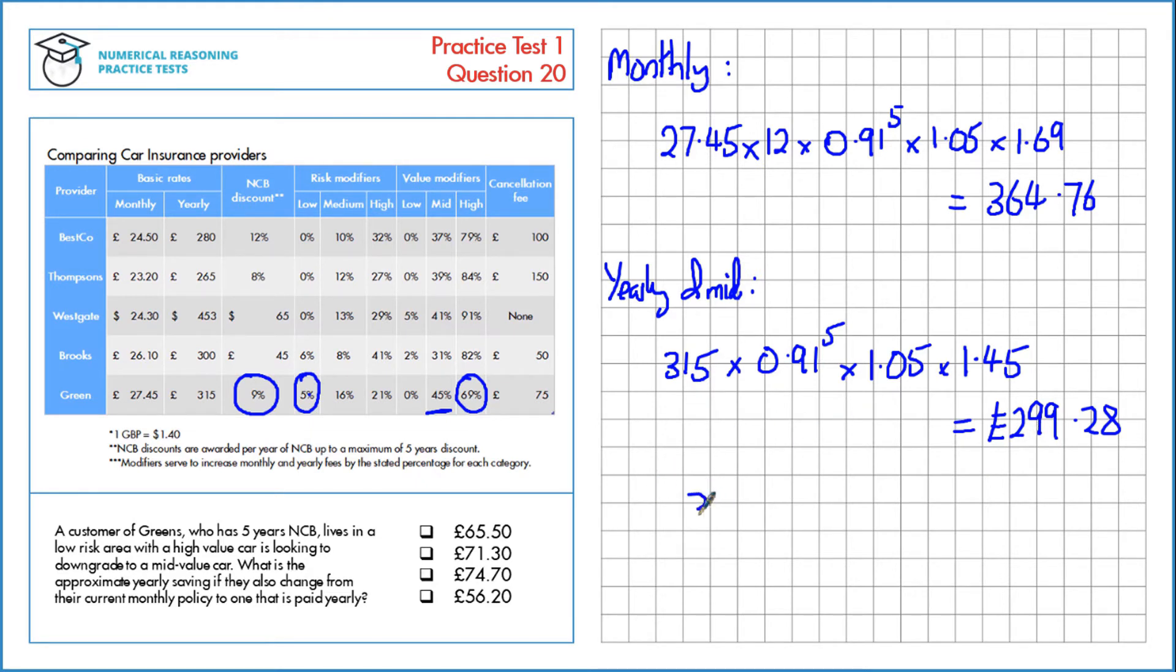So let's have a look at what the saving is. £364.76 subtract £299.28 which is approximately £65.50.